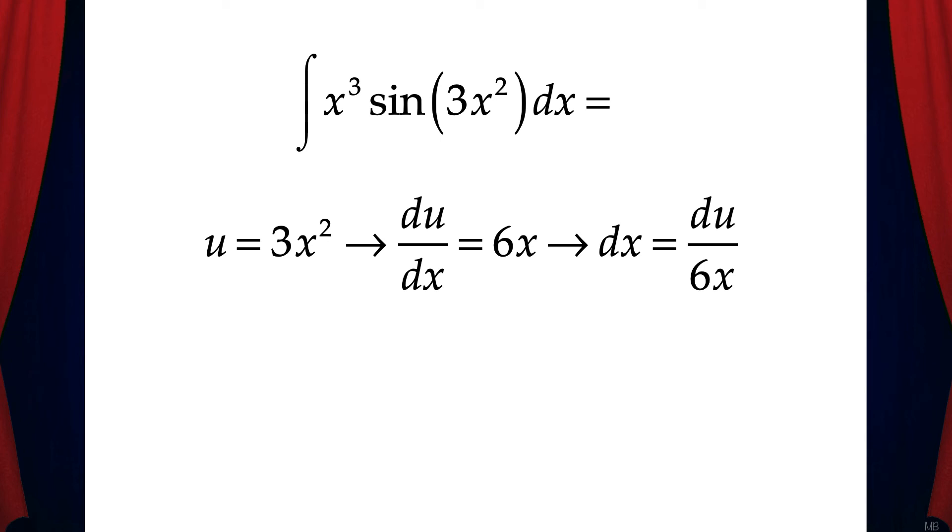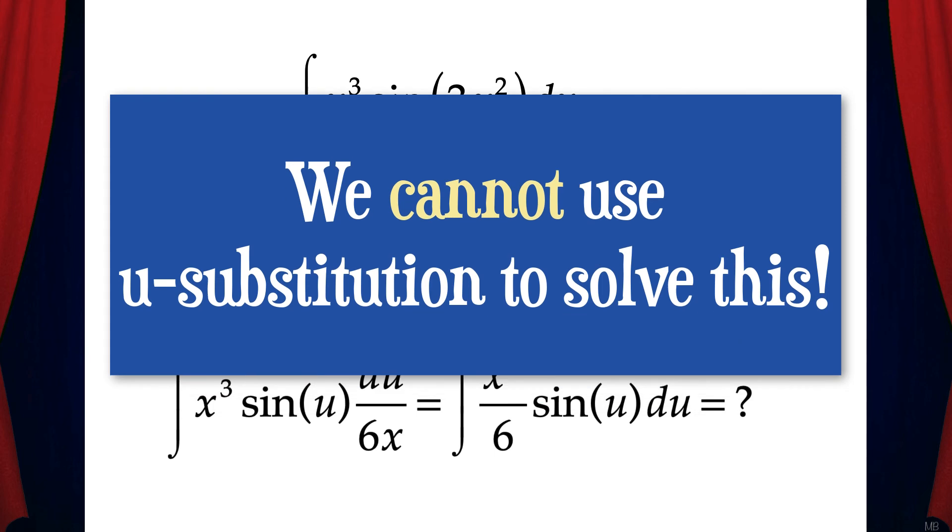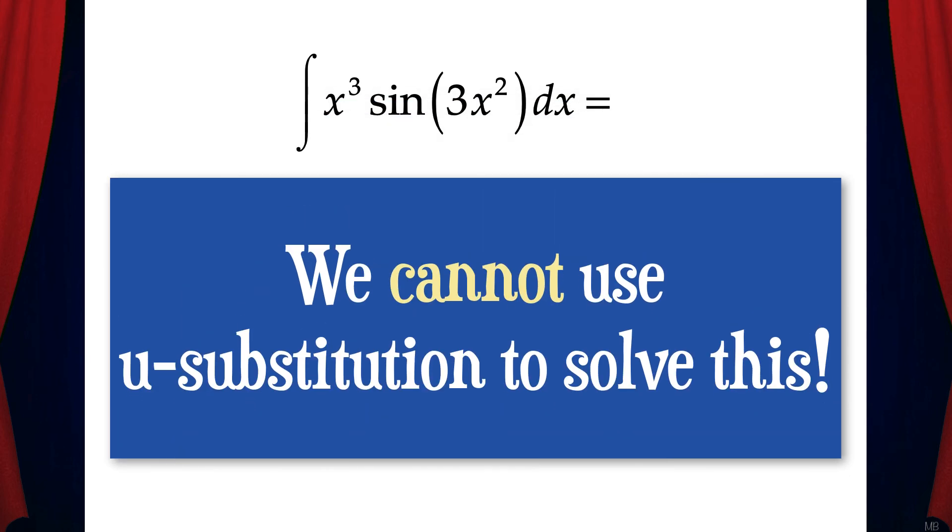But now what we need to do is try to get the integral in terms of u only. When we try to do this, we get x cubed sine u times du over 6x. After canceling the x in the denominator, we're left with x squared over 6 times sine u du. This means there's no way to get this integral in terms of u only. So, spoiler alert, we cannot use u substitution to solve this integral.